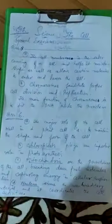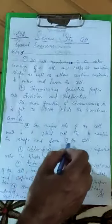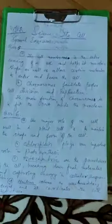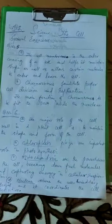Cell wall in the plant cell. The major role of the cell wall in a plant cell is to maintain the shape and form of the cell. Plant's shape and structure is maintained by the cell wall.